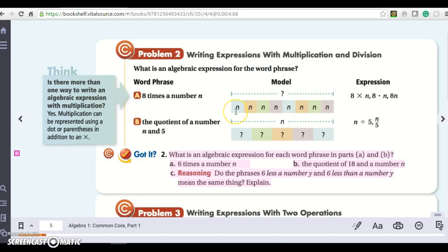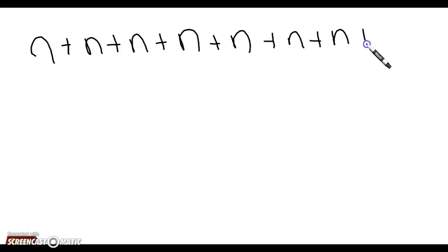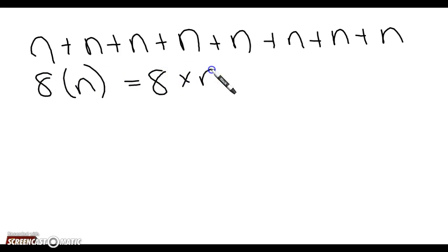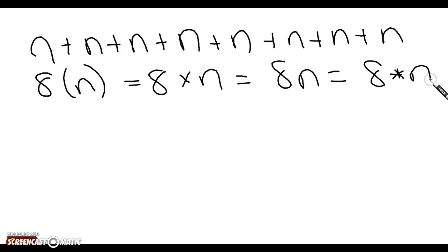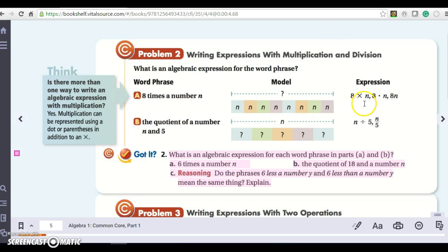So if I have eight number n's, it's the same thing as adding — that means I'm going to multiply it. So if I have eight plus eight plus eight plus eight plus eight plus eight plus eight plus eight, that's the same thing as writing eight times eight. There are different ways to write it, but what's the preferred way to write it when we're doing algebra? Eight n. That's the preferred way. This eight n is the preferred way to write it in algebra.